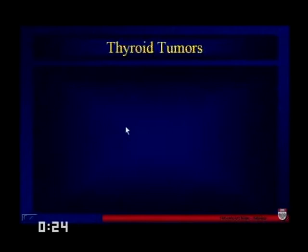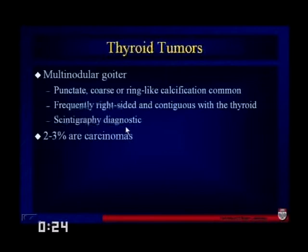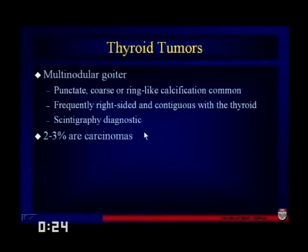Thyroid tumors: a multinodular goiter can have punctate or coarse ring-like calcifications, is frequently right-sided, and can be contiguous with the thyroid superiorly. Scintigraphy is really the best way to make the diagnosis. A certain percentage will be malignant, and we can't tell whether something is malignant or not by CT.